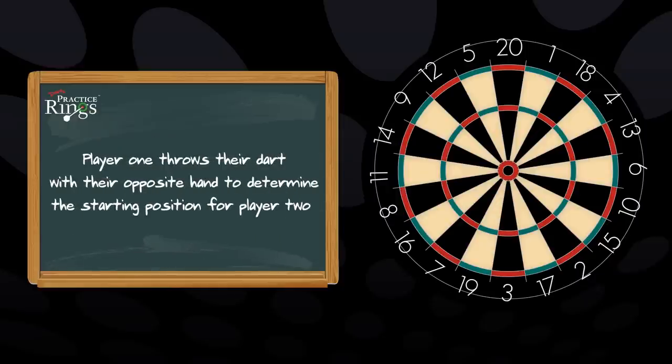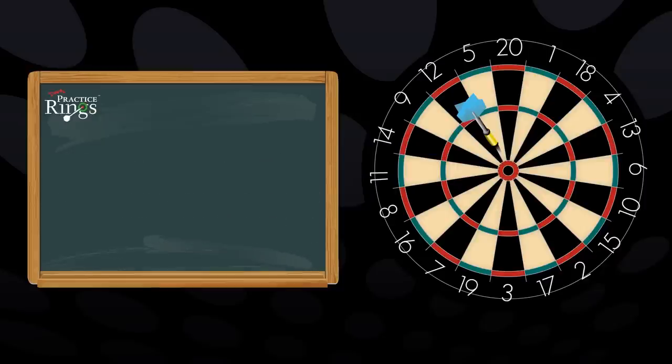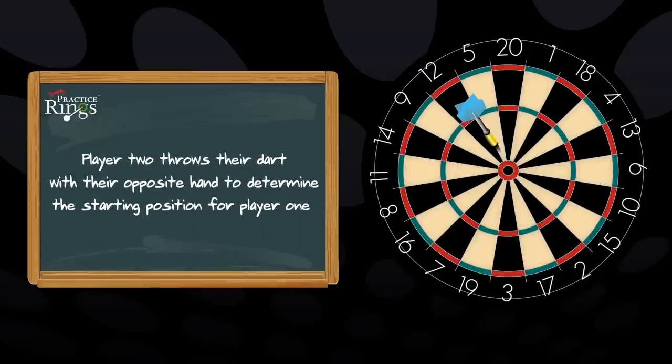To determine who goes first, player 1 throws a dart with their opposite hand to determine the starting point for player 2. Player 2 does the same for player 3's starting point.